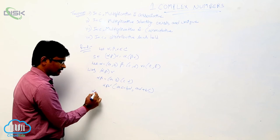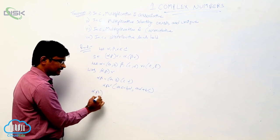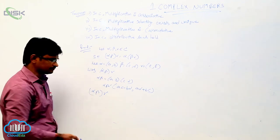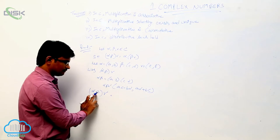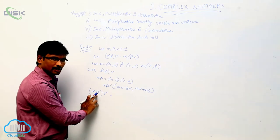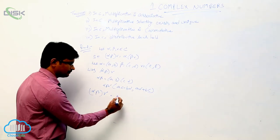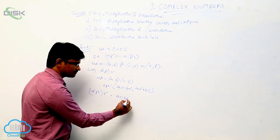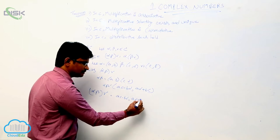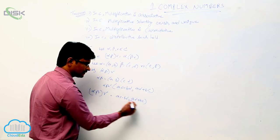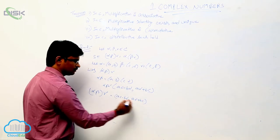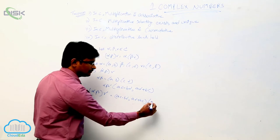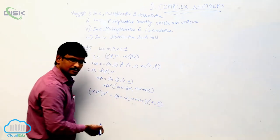Now we will find out alpha beta into gamma. The value of alpha beta is (ac minus bd, ad plus bc), and gamma value is (e, f). So we multiply these together.